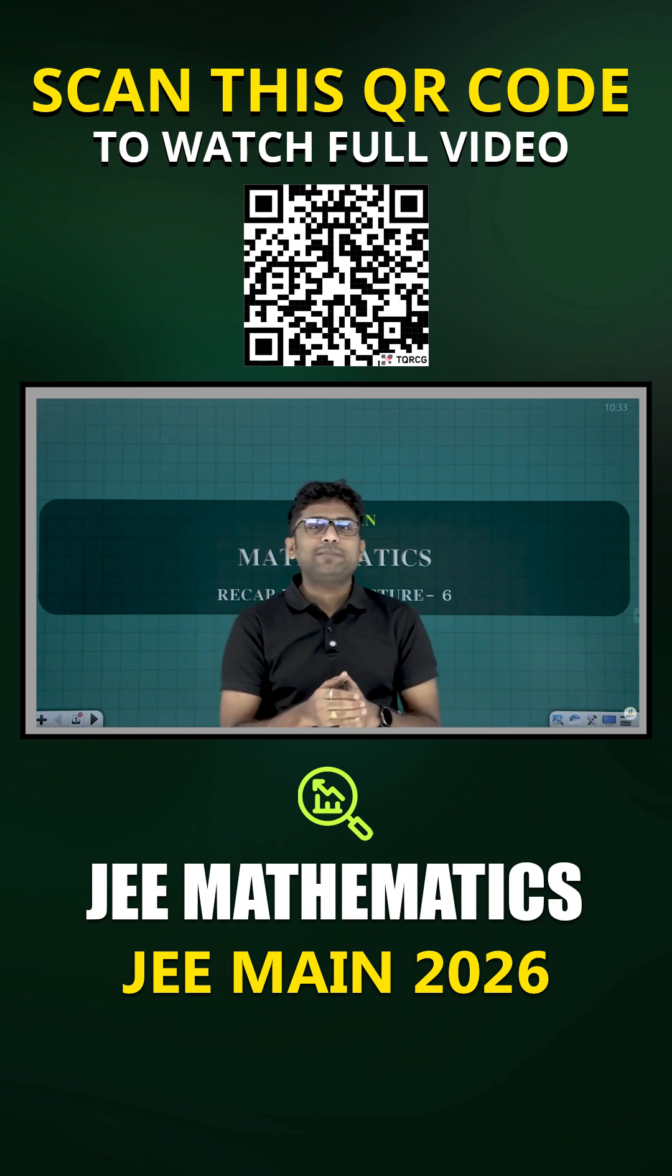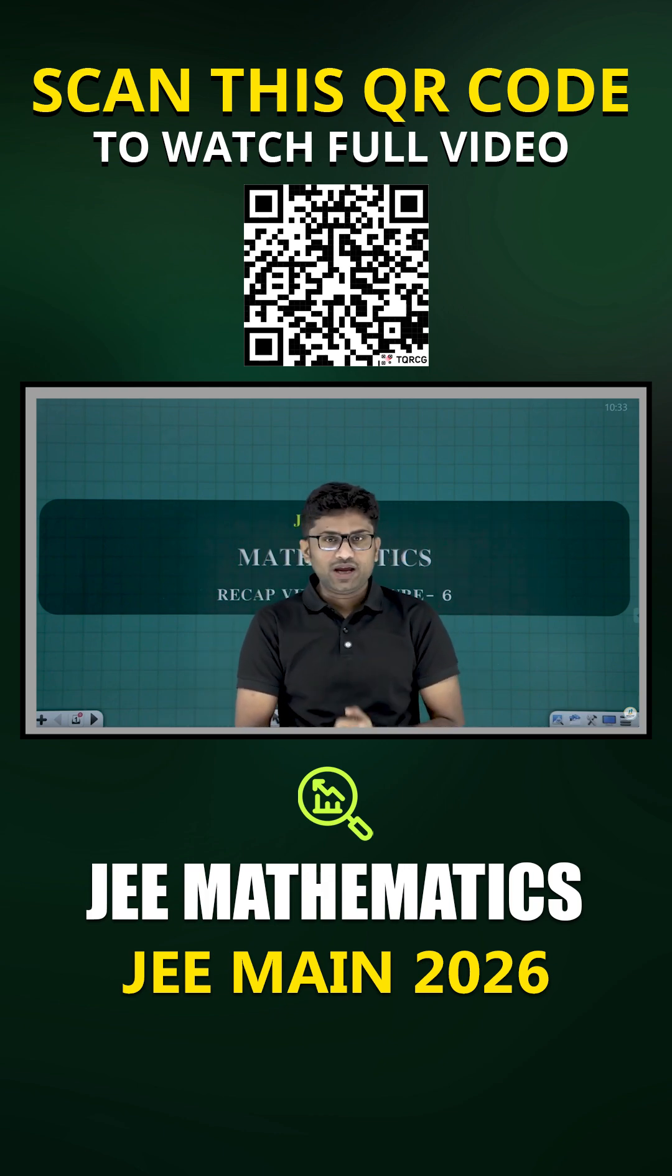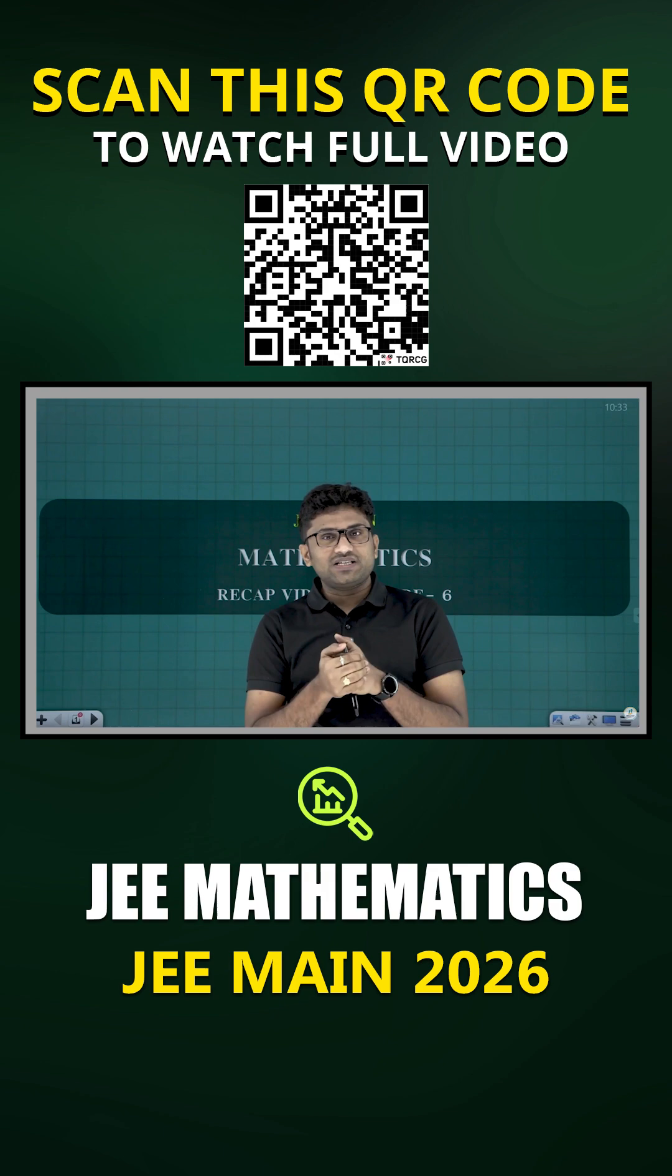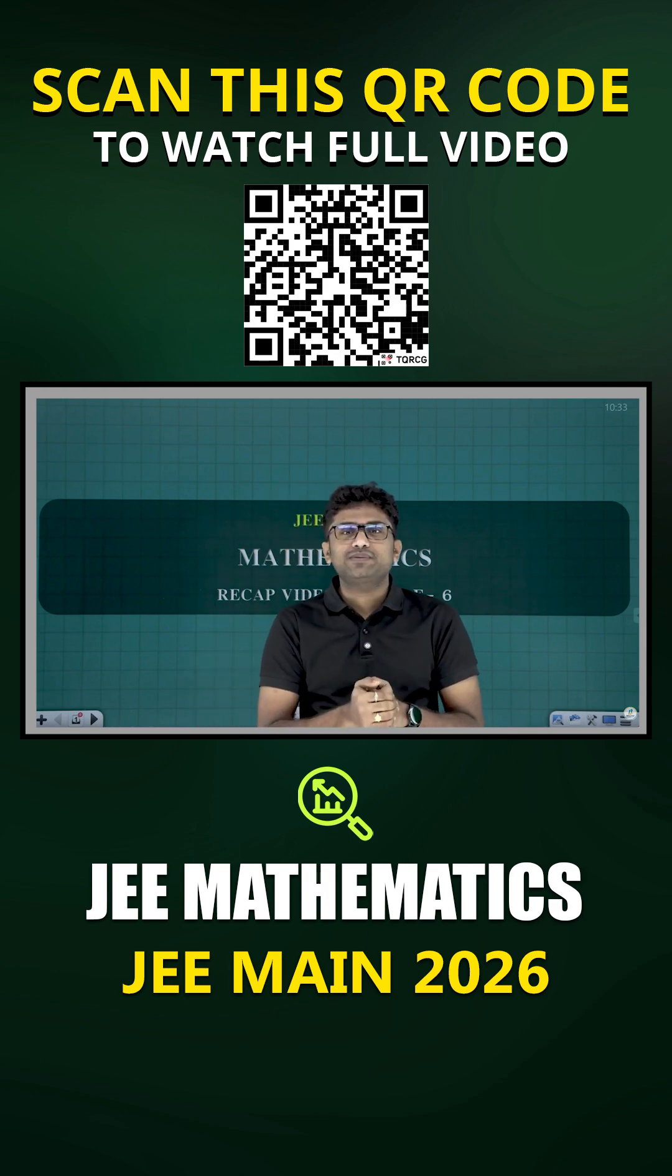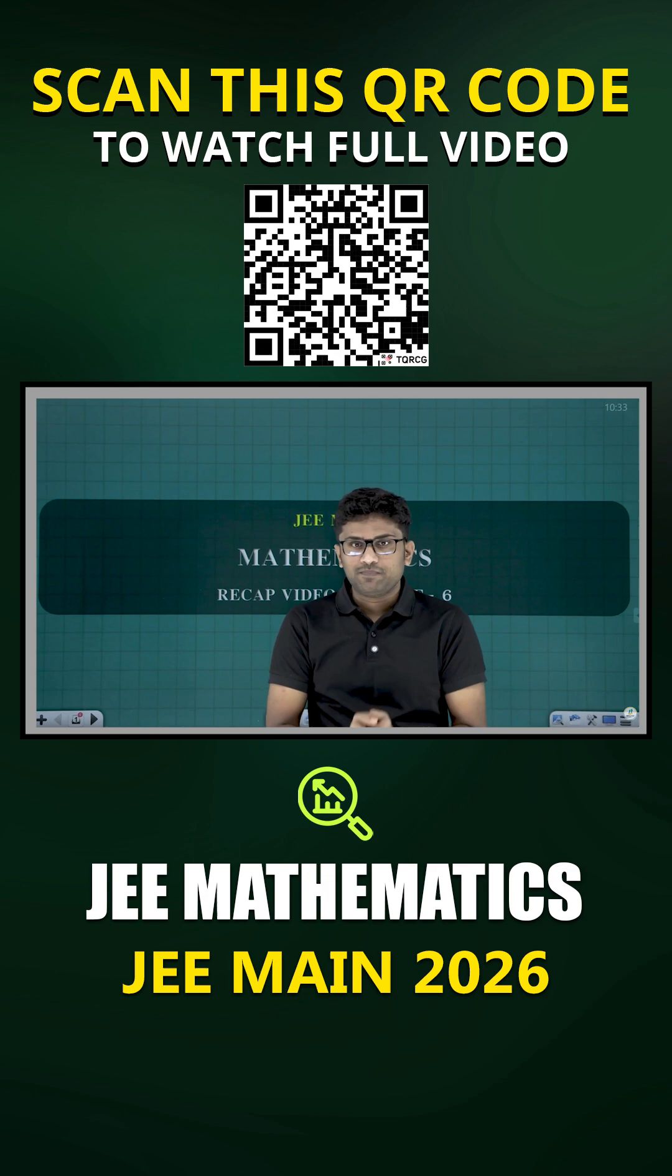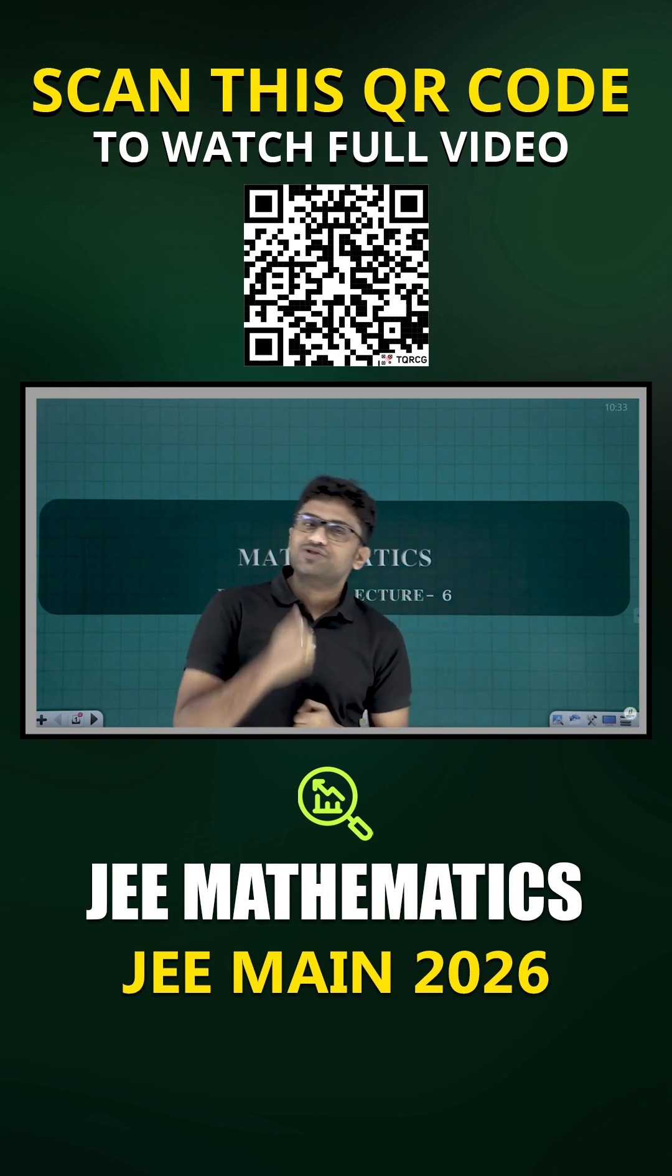This lecture will be revising the complete two-dimensional geometry. In this 2D geometry, we start with straight lines, pair of straight lines, circle, parabola, ellipse, and we end up with hyperbola. So first we'll start with straight lines.